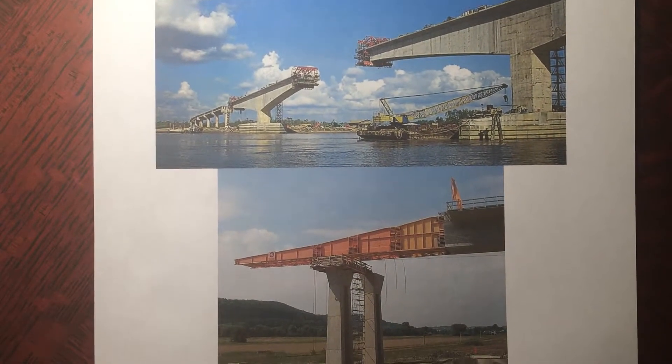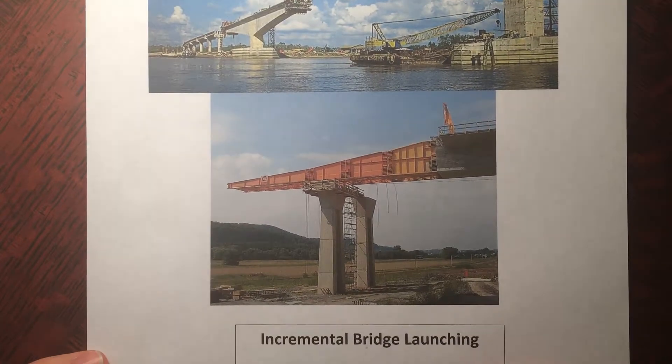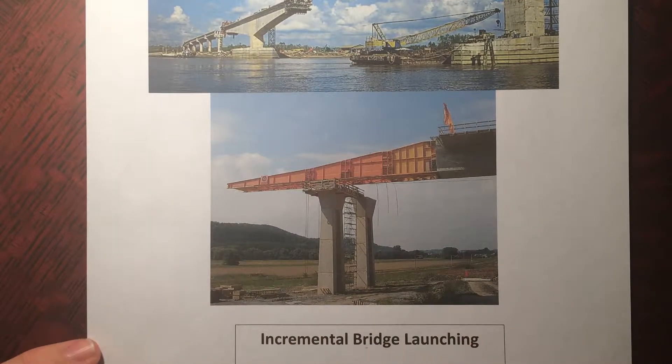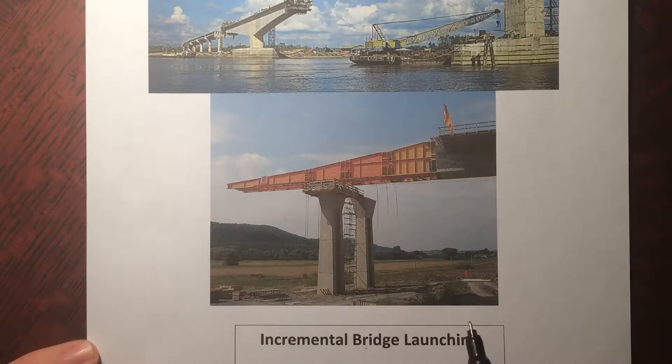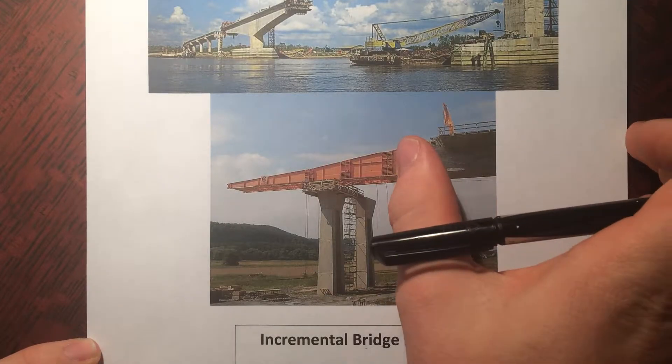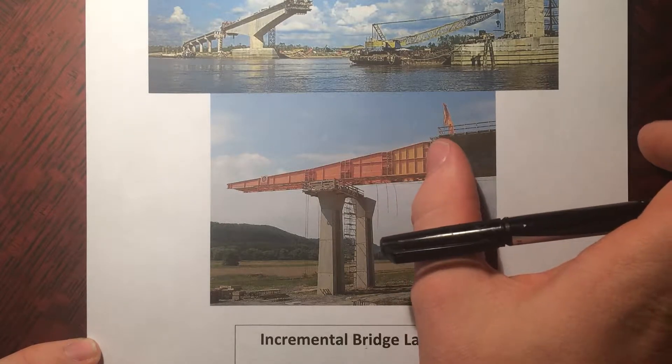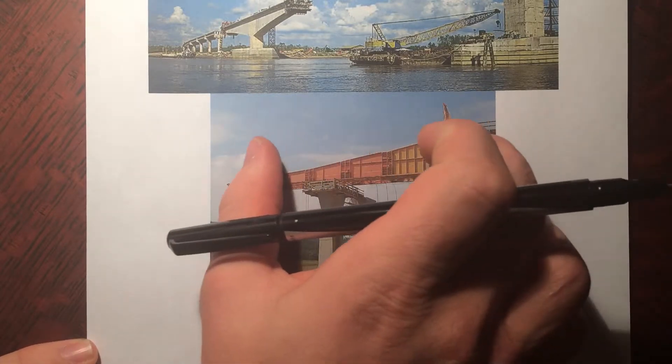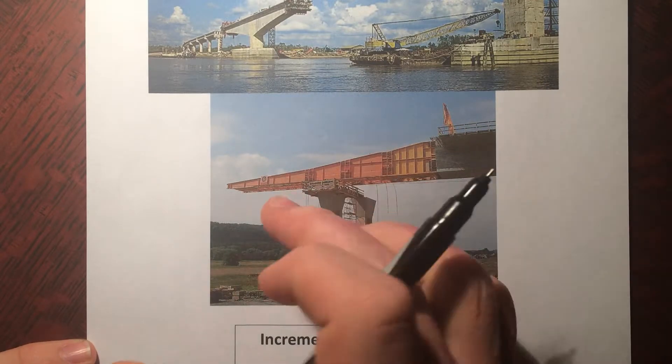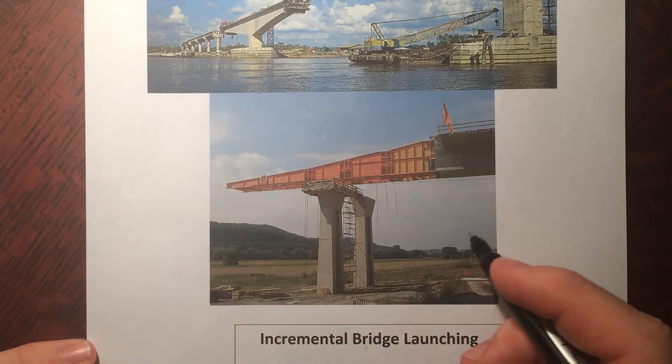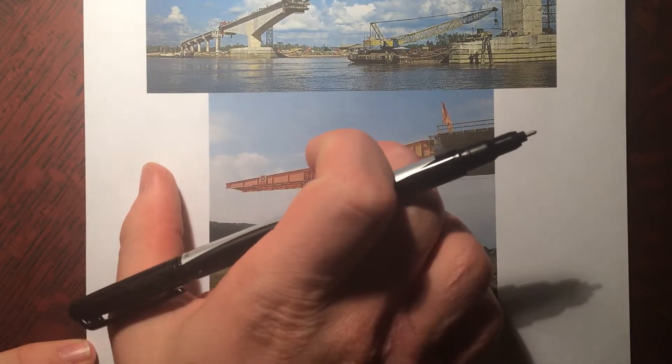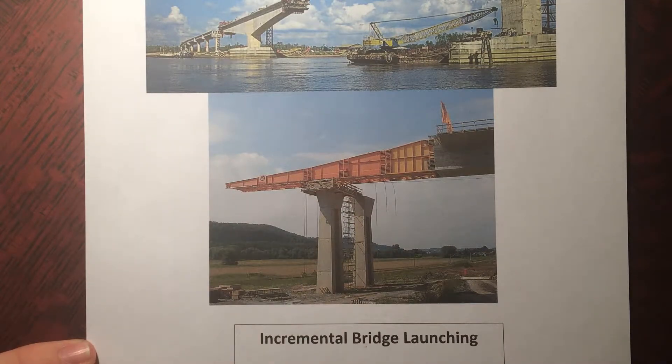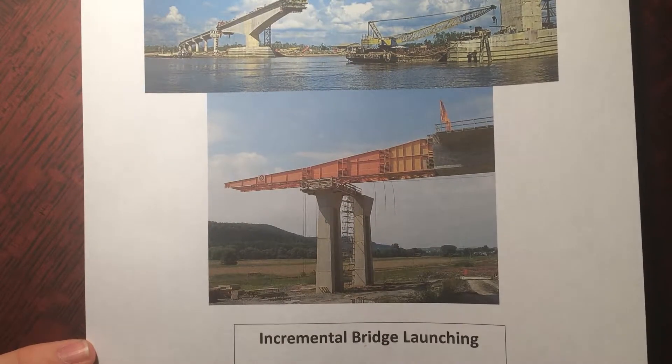So another bridge construction technique is called incremental bridge launching. And there's some great animations on YouTube of this. But basically what it does is it involves building a piece of bridge out on a piece of land. Then you increment it out onto where you need. You cement it in place, you fasten it in place, and you move all your bridge building equipment onto that piece. You build the next section of the bridge, and you jack it out, and you go that way until you've completed building the bridge. So I guess that's more what this problem is.